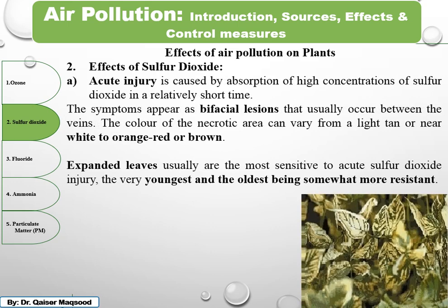For acute injury, the symptoms appear as bifacial lesions — both sides of the leaves are affected. This necrosis usually occurs between the veins, and the color of the necrotic area can vary from light tan, near-white, orange, red, or brown. These different colors arise from the necrotic area due to acute sulfur dioxide injury. Expanded leaves are most sensitive to acute sulfur dioxide injury.